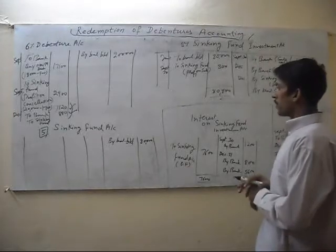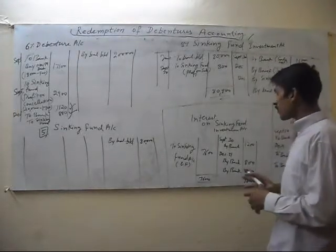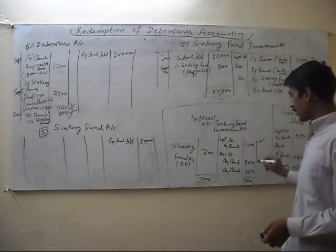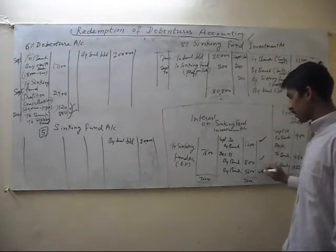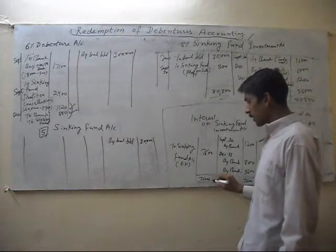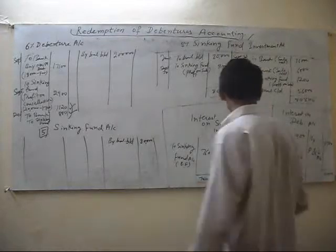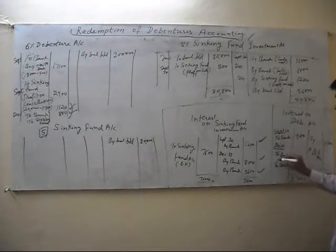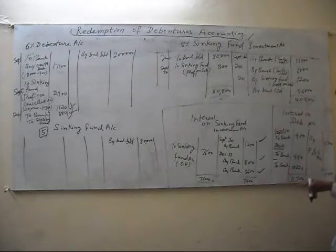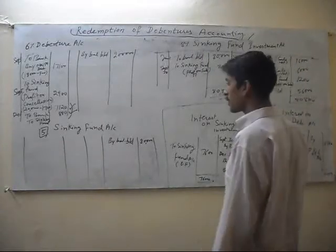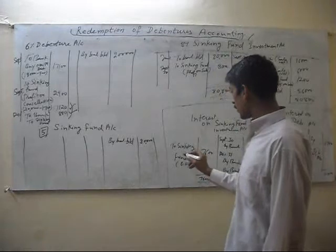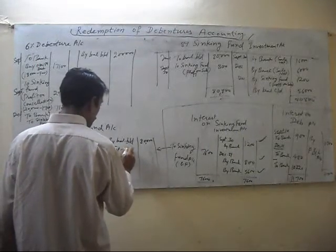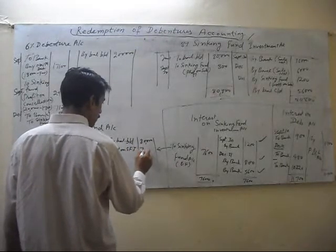In the Sinking Fund Investment Account, we need to make this account first. We received interest on sinking fund in September and in December. The total amount is 7,600, which will be transferred to the credit side of the Sinking Fund Account. By interest on Sinking Fund Investment Account: 7,600.